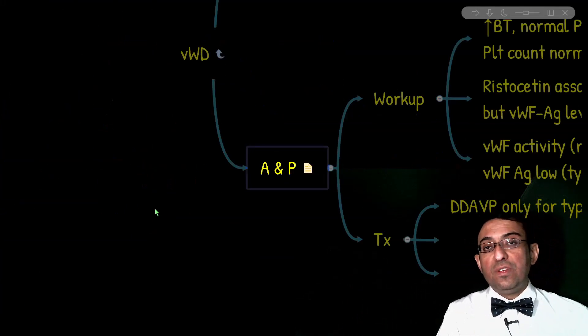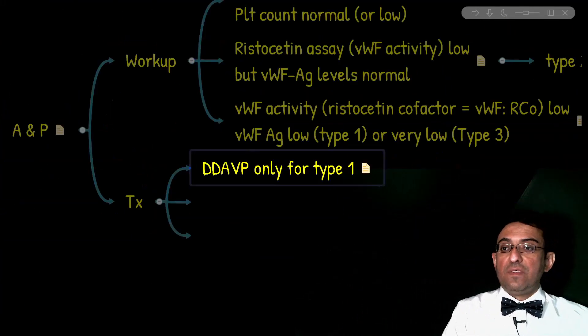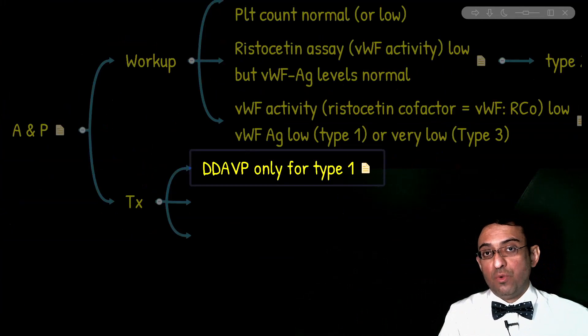Based on what we have discussed so far, what is the recommended treatment for type I von Willebrand disease? That is desmopressin. Now, why do we not use desmopressin in type II or III?